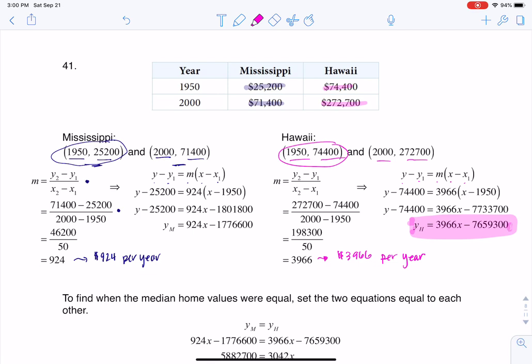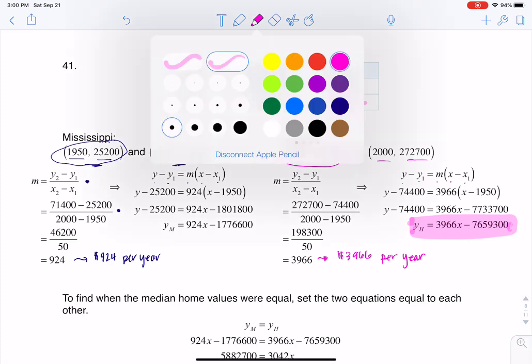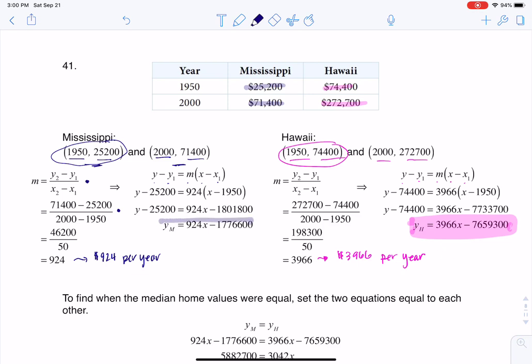Now those are the two linear models. And the question in front of us is when were these equal to each other? Oops, it looks like I might have erased my linear model here. Not erased it, but erased my little highlighter. So here's Mississippi.